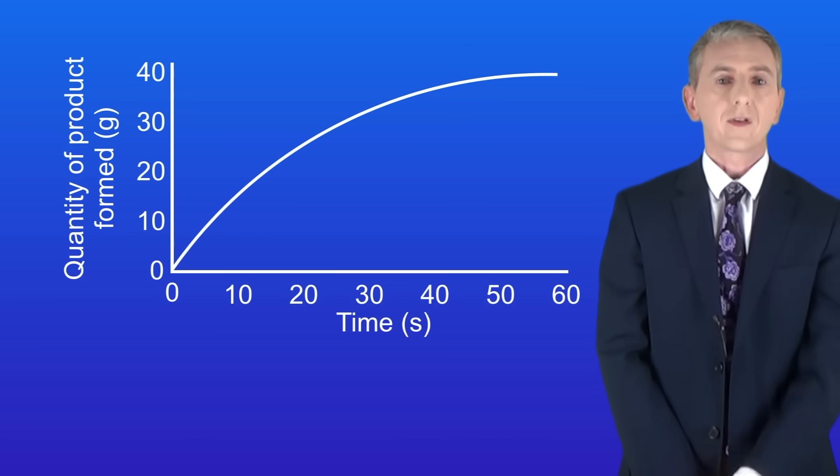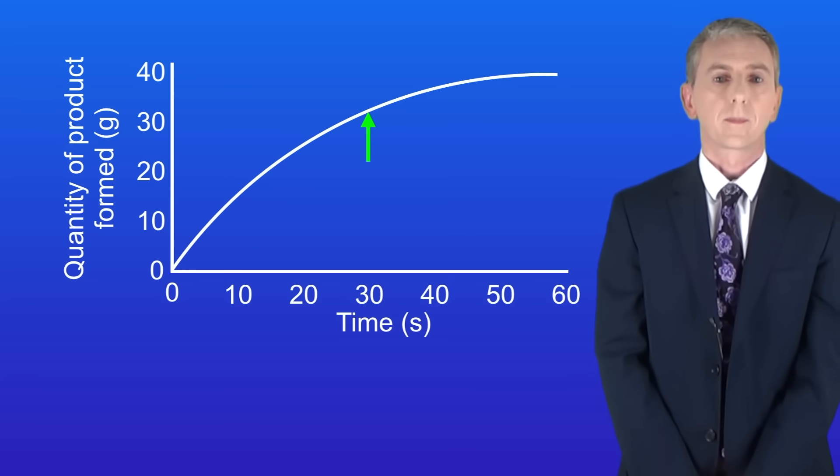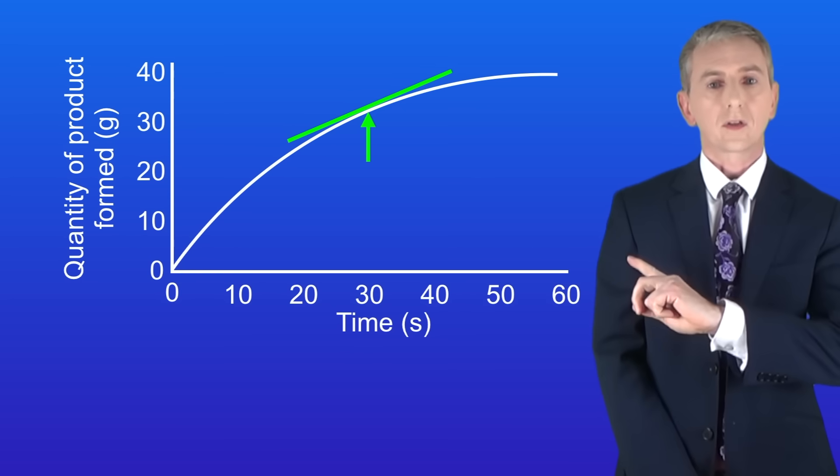Here's our line again and this time I've put numbers on the x and y axes. I'm going to use a tangent to measure the rate of reaction at 30 seconds. So here's my tangent at 30 seconds.